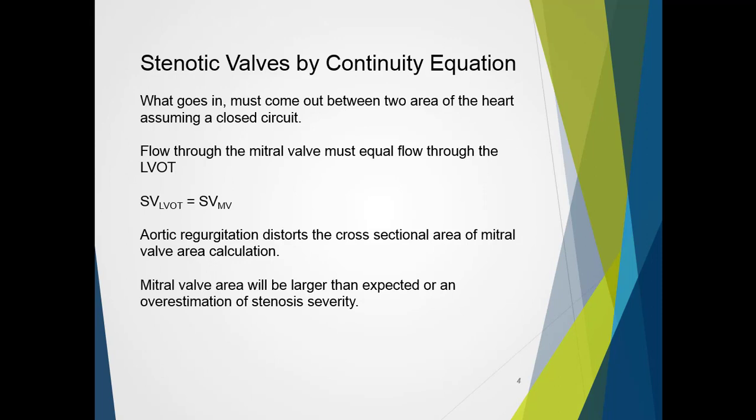So we can assess our stenotic lesion by the continuity equation. We return to the basic principle of what goes in must come out between two areas of the heart, assuming it's a closed circuit. Therefore, flow through the mitral valve must equal flow through the left ventricular outflow tract, or any other measured point, in the absence of either point capturing valvular regurgitation. So therefore, stroke volume through the left ventricular outflow tract equals stroke volume through the mitral valve.